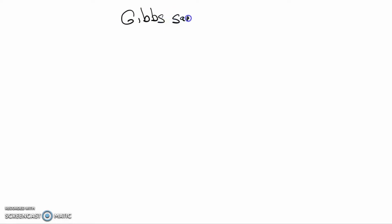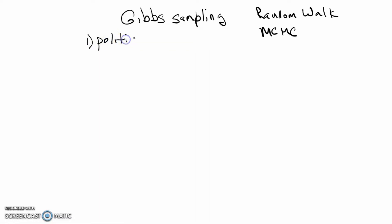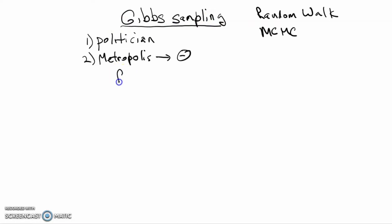The purpose of this video is to address Gibbs sampling, which is yet another example of a random walk Markov chain Monte Carlo algorithm. We've already seen two examples: first the politician algorithm, and secondly the Metropolis algorithm applied to theta, the Bernoulli binomial parameter for a binary variable. One reason for doing Gibbs sampling is that it's more efficient when you have more than one parameter.